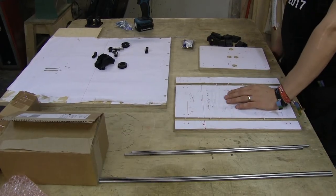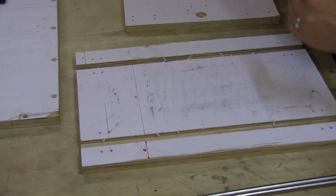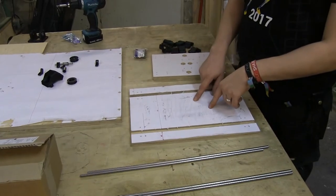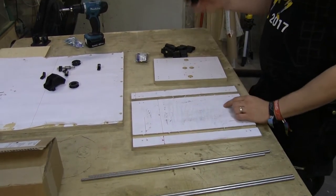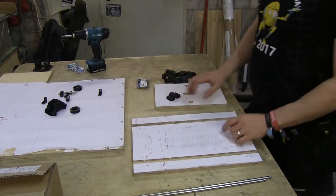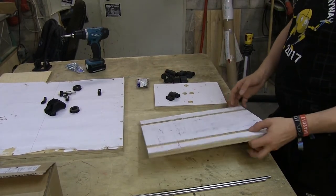This is the lower part of the book holder. The book sits on here, so it's right side up right now. We need to attach the linear ball bearings on the other side of this, so let's turn this around.